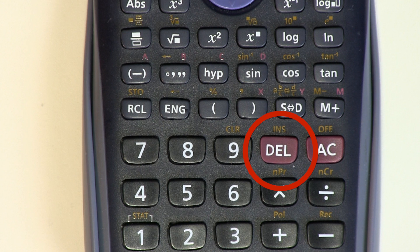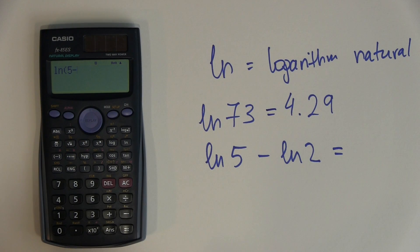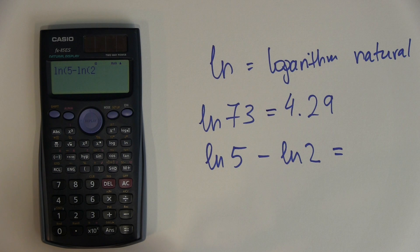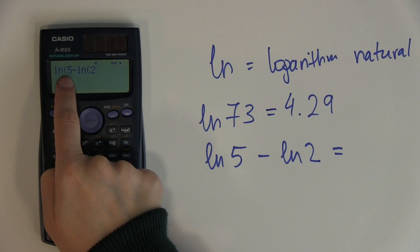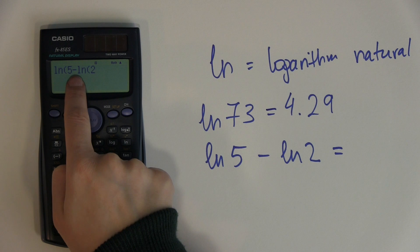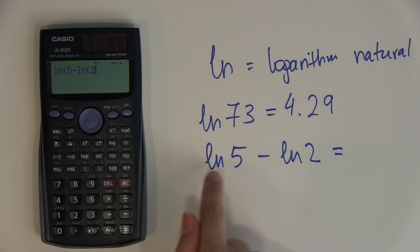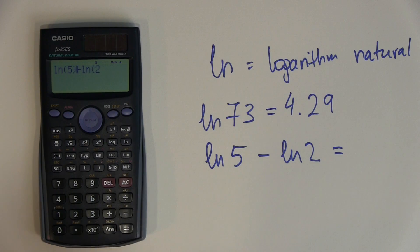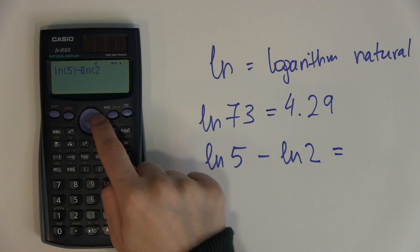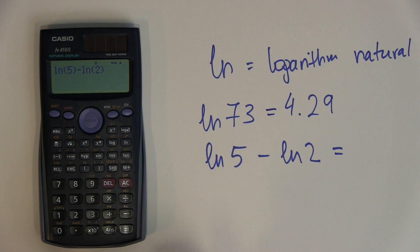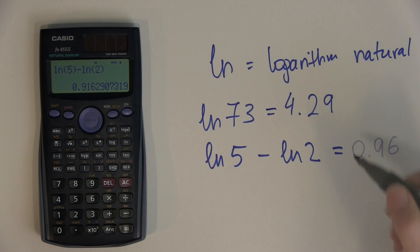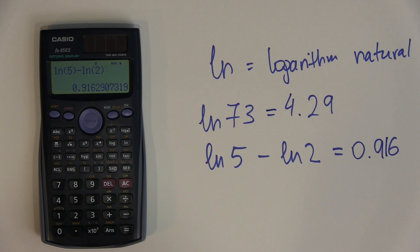The delete button is always useful — it deletes the last thing in front of the cursor. Now I type LN 2. However, because the bracket is still open, I'm actually calculating the logarithm of the difference between 5 minus LN 2. So I use the arrow button to come back and close the bracket after the 5, then close the bracket behind the 2 as well. This tells the calculator where to stop calculating each log. The correct answer is 0.916 to three decimal places.